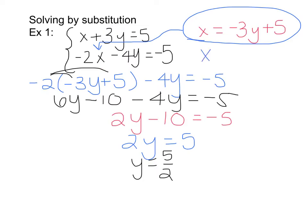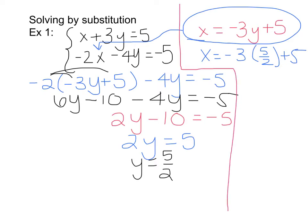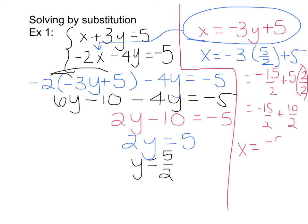I have x equals negative 3 times 5 halves plus 5. Negative 3 times 5 halves gives me negative 15 over 2 plus 5. I can't add 5 directly because it doesn't have a like denominator, so I multiply it by 2 over 2, giving negative 15 halves plus 10 halves. Adding the numerators gives x equals negative 5 over 2. Now that I have both x and y, I write the solution as the point negative 5/2, comma 5/2.